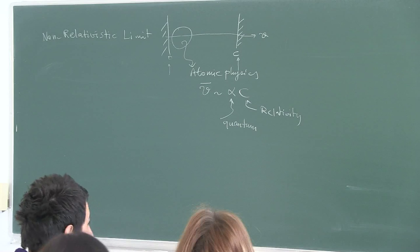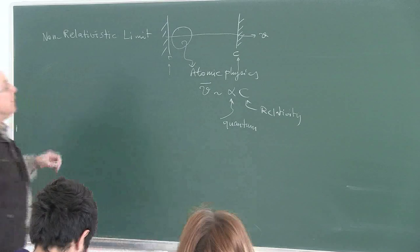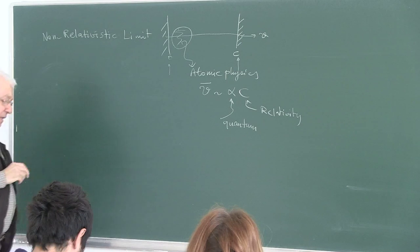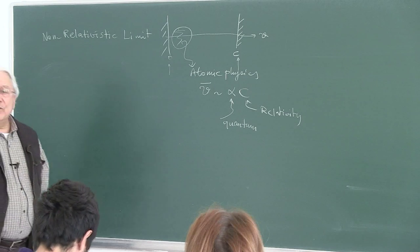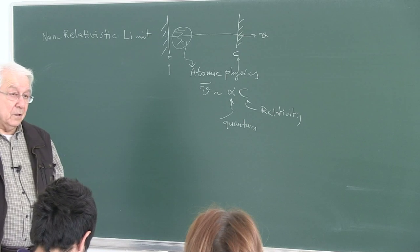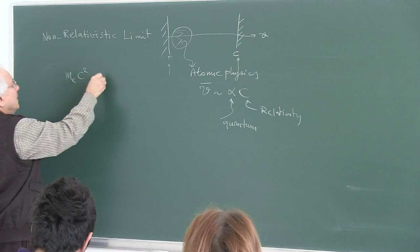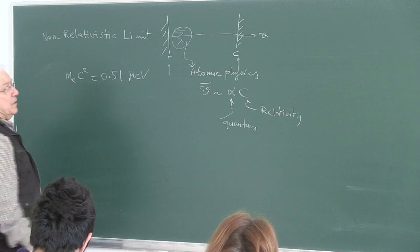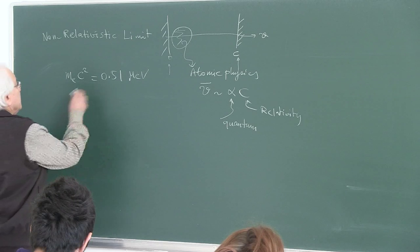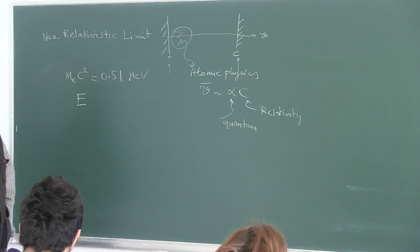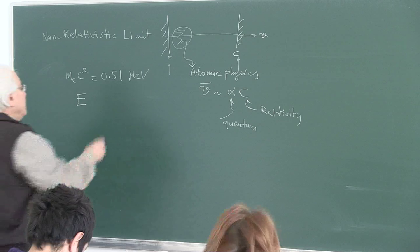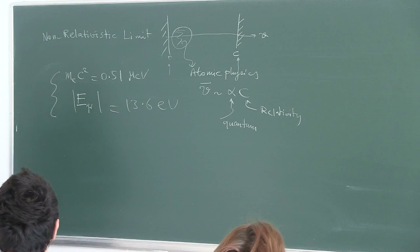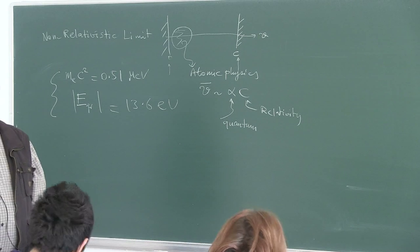Let's develop the algorithm for going to the atomic physics region. We start by estimating the energies associated with atomic physics. We have the rest mass energy of the electron — half a million electron volts — and the binding energy of atomic states. For the ground state of hydrogen, that is 13.6 electron volts. This gives a good basis for introducing the approximation algorithm.